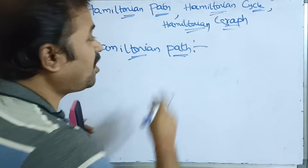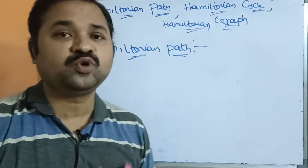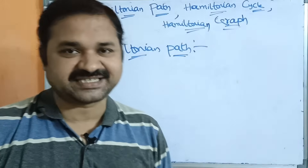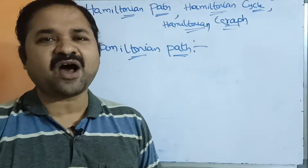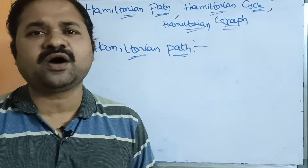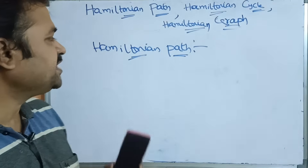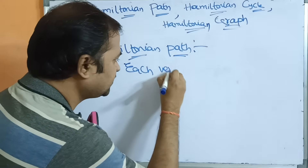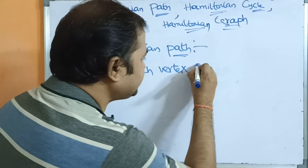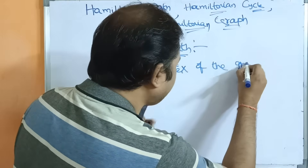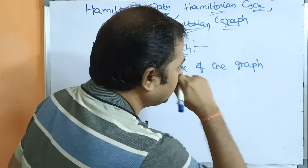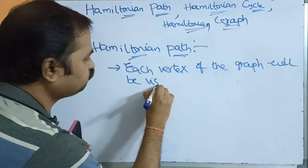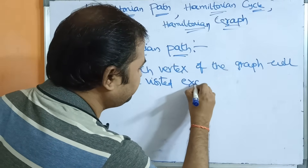In Euler graph, Euler path, or Euler circuit, we focus mainly on edges. Whereas in Hamiltonian graph, we focus on vertices. Hamiltonian path means each vertex of the graph will be visited exactly once.